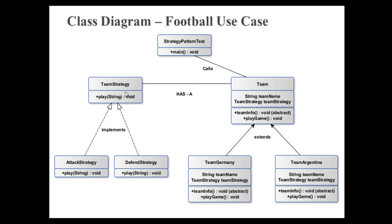Team strategy is an interface having a play method. It has two concrete implementations: attack strategy and defense strategy. Both team strategies are like algorithms and they are interchangeable for a team. That is, a team can play in attacking position at one time and defensive position at another. Therefore, in order to implement this dynamic behavior, the team class has a team strategy instance variable. Once the test class decides a strategy for a team, it will associate that strategy to the team. On calling the play game method of team, it will directly call the play method of the concrete team strategy through the team strategy instance variable.